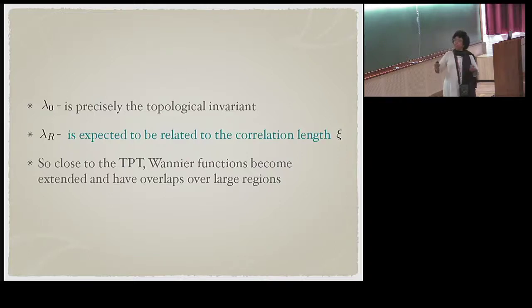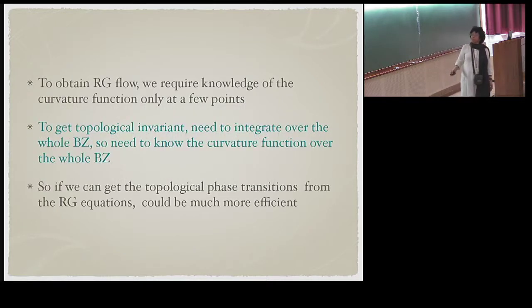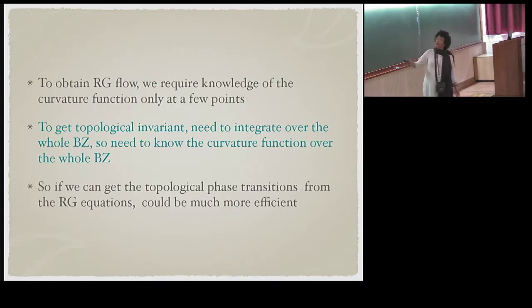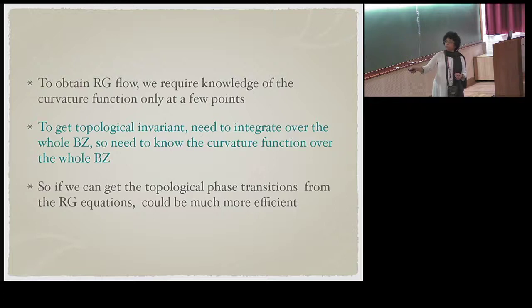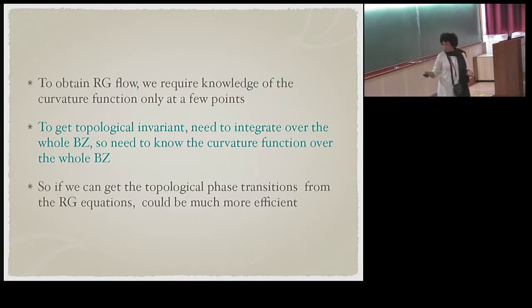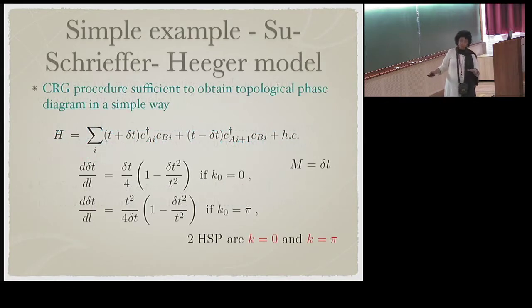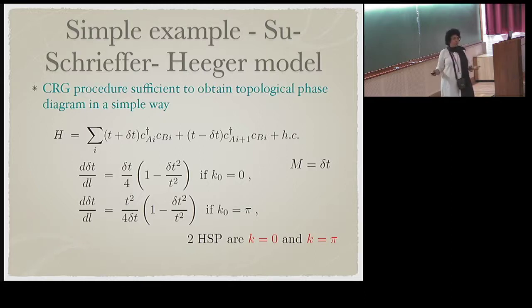The advantage of this approach is that to obtain the RG flow we only require knowledge of the curvature function at a few points, whereas computing the topological invariant requires integrating over the whole Brillouin zone. If we can get topological phase transitions from the RG equations it could be more efficient in cases where we don't have full knowledge of the theory. For now we benchmark the method against cases where the results are already known.